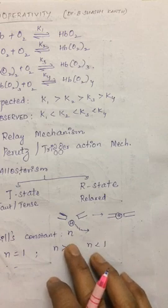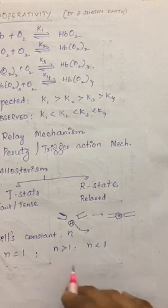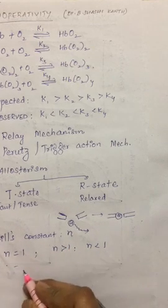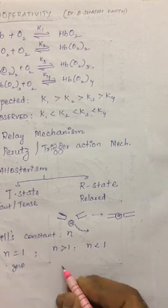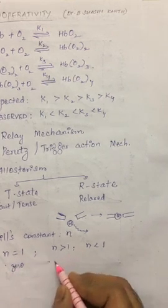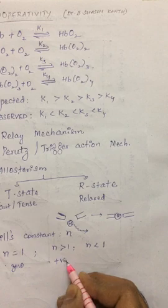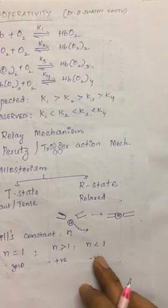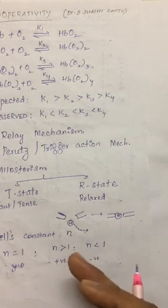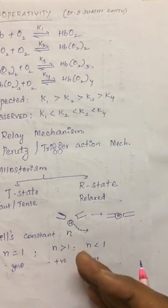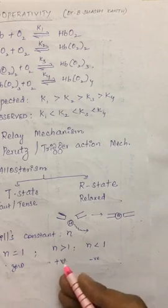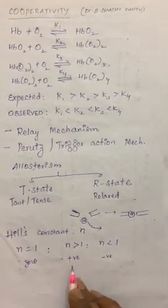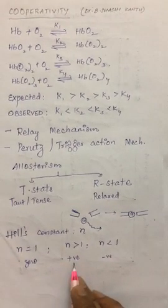Cooperativity is usually explained by Hill's constant, given by n. If n equals 1, cooperativity is absent. If n is greater than 1, it is positive cooperativity; if n is less than 1, it is negative cooperativity. For hemoglobin binding to dioxygen, n values are greater than 1 in all species — in humans it is found to be around 2.8 — so we call it positive cooperativity.